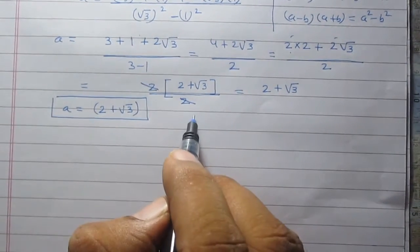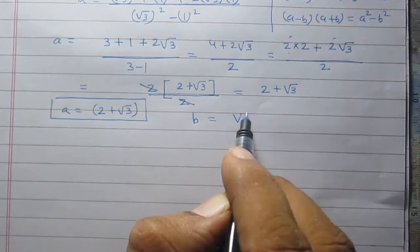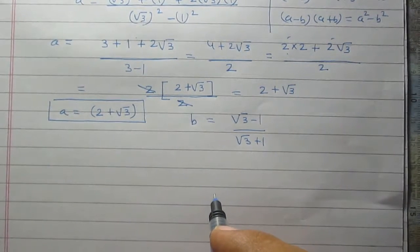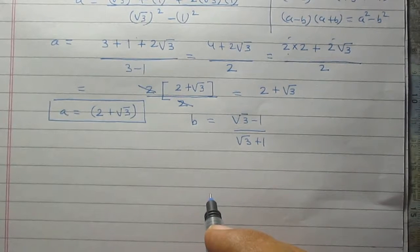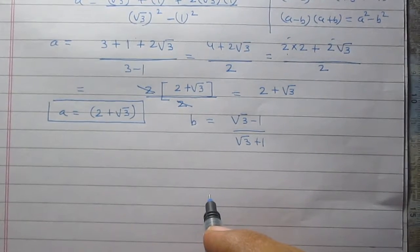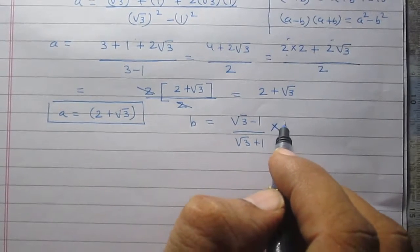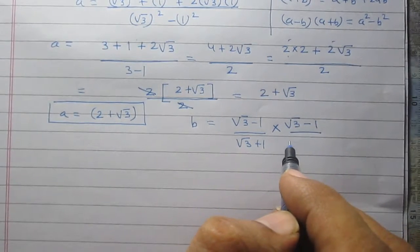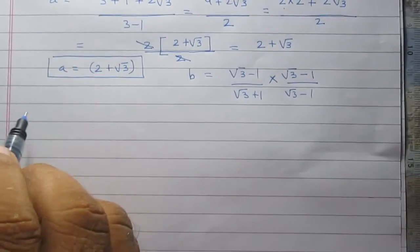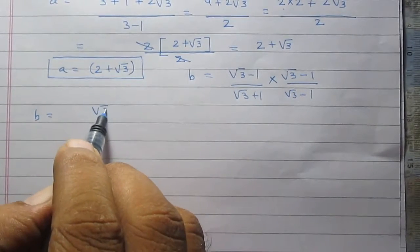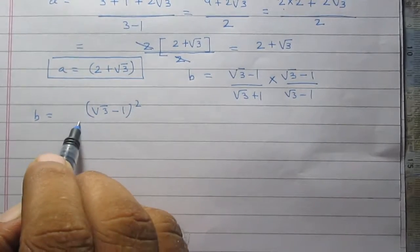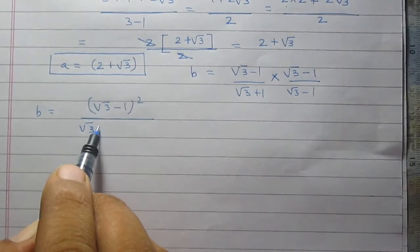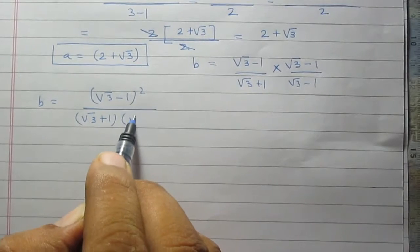Now consider the value of b — it is square root of 3 minus 1 upon square root of 3 plus 1. Once again, we have a fraction with its denominator irrational and we are to rationalize it. We can rationalize this fraction by multiplying its numerator and denominator by square root of 3 minus 1. We will get b equal to square root of 3 minus 1 whole square in the numerator, divided by the multiplication of square root of 3 plus 1 and square root of 3 minus 1.